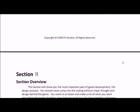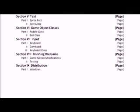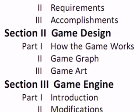Next tutorial we'll do section 2, which is the game design process — how the game works, how to do a game graph, and game art. Then the tutorial after that we'll talk about the game engine introduction and modifications, so that will be our first look at the coding process. We'll also go into the IDE and switch between the IDE and the text tutorial as we go along. So keep an eye out for tutorial 2 called Game Design. Hope to see you next time.